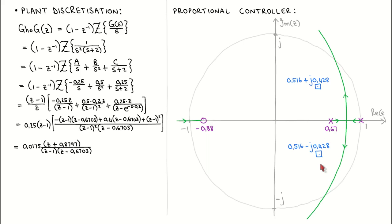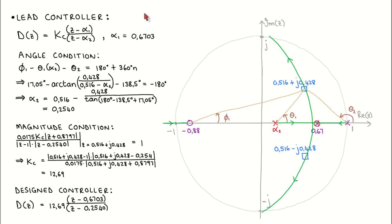We therefore add lead compensation to the proportional controller. The controller with lead compensation is shown here. We have to choose the location of the zero, alpha1, and the pole, alpha2, as well as the controller gain kc. We arbitrarily choose the controller zero to cancel the plant pole at 0.6703. Note that there is no specific reason why we should do this, but it simplifies the calculation somewhat. The plant zero and poles are shown in purple, and the controller pole and zero are shown in red. When we draw the root locus, we see that it has the same shape as before but has been pulled to the left. It should therefore be possible to choose the controller pole location, alpha2, such that the root locus passes through the desired closed loop poles.